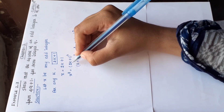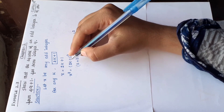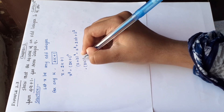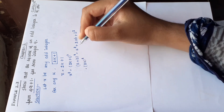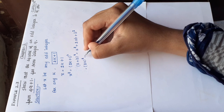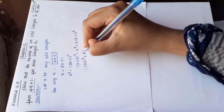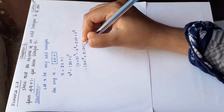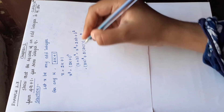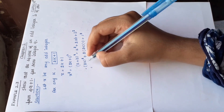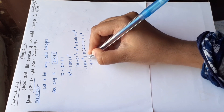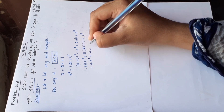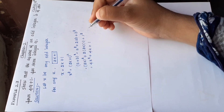இந்த formula படி expand பண்ணுங்க. 2k என்பது a, 1 என்பது b. a square: (2k) the whole square = 4k square. Plus 2 into a into b: 2 into 2k into 1 = 4k. Plus b square: 1 square = 1. So, 4k square plus 4k plus 1.